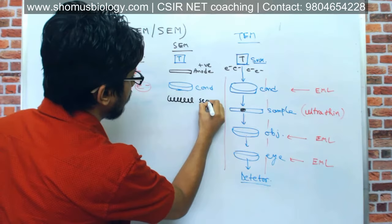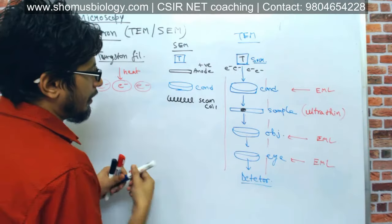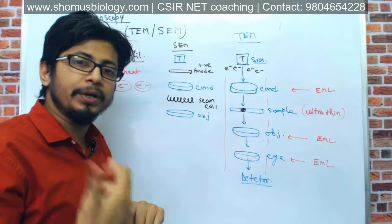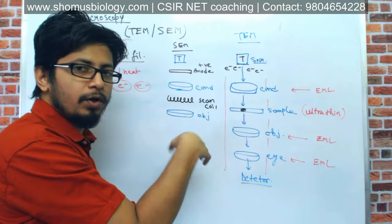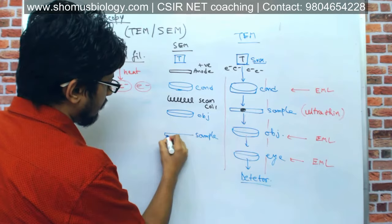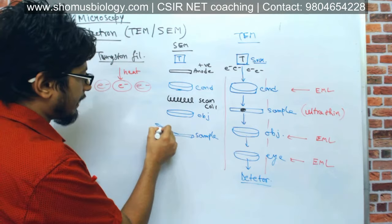So remember these four components using the mnemonic ACSO: A for anode, C for condenser, S for scan coil, and O for objective lens. After the objective lens we have the sample, because right after the electron beam hits the sample the scattered electrons will be detected by the detector.